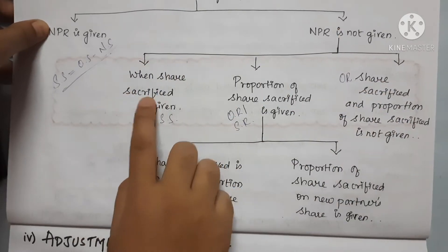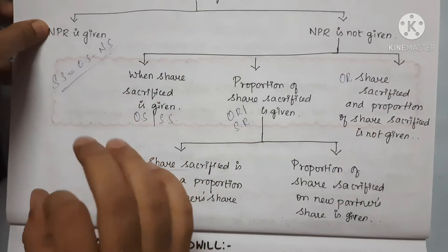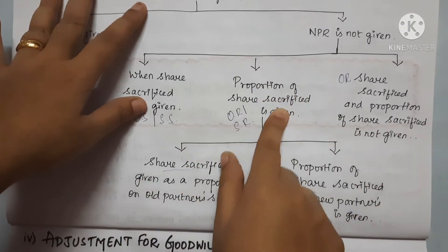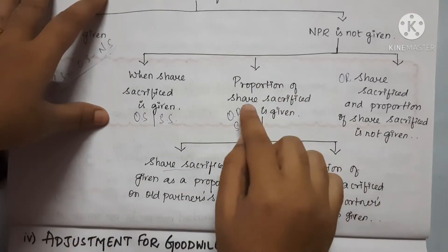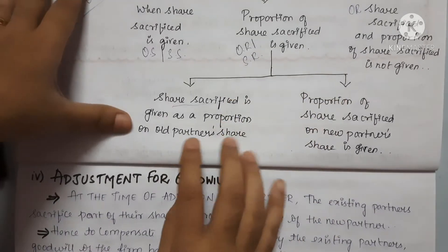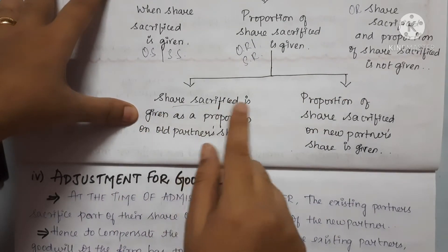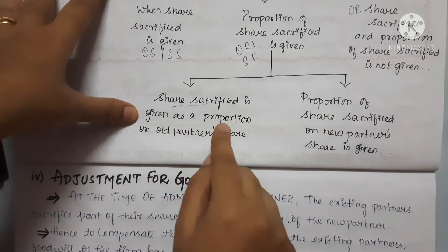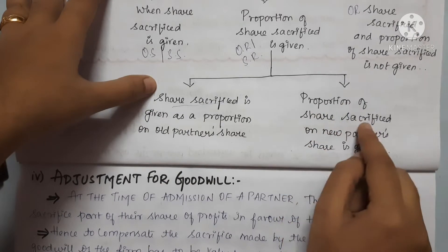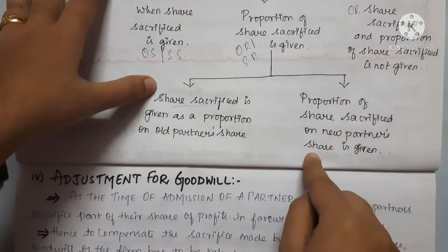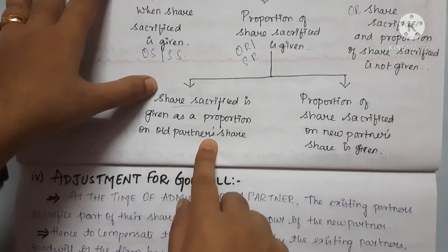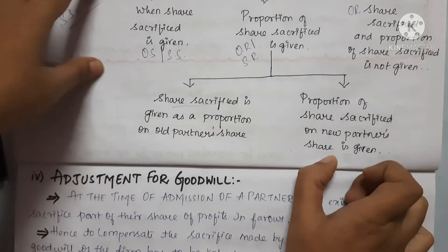When share sacrifice is given, let's look at the methods. A portion of share sacrifice is given in two types. First, share sacrifice is given as a proportion of the old partner's share. Second, share sacrifice on the new partner's share is given.